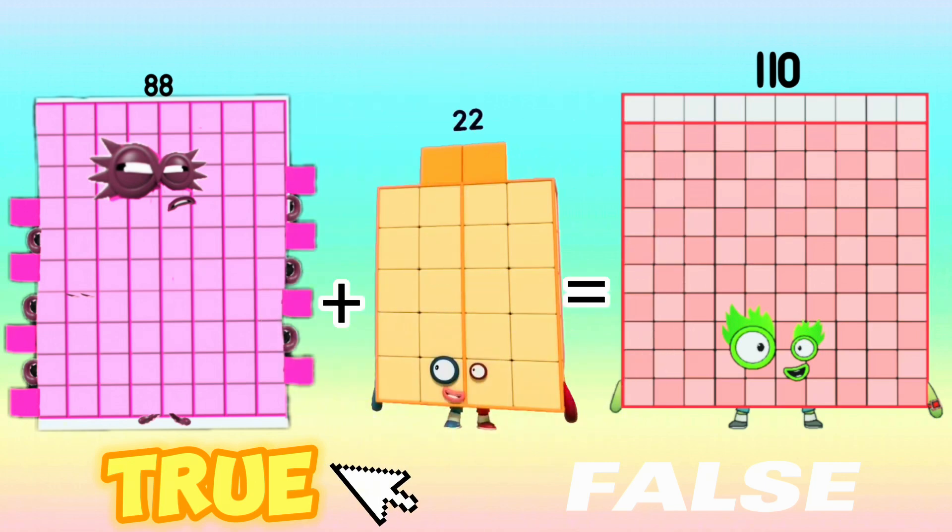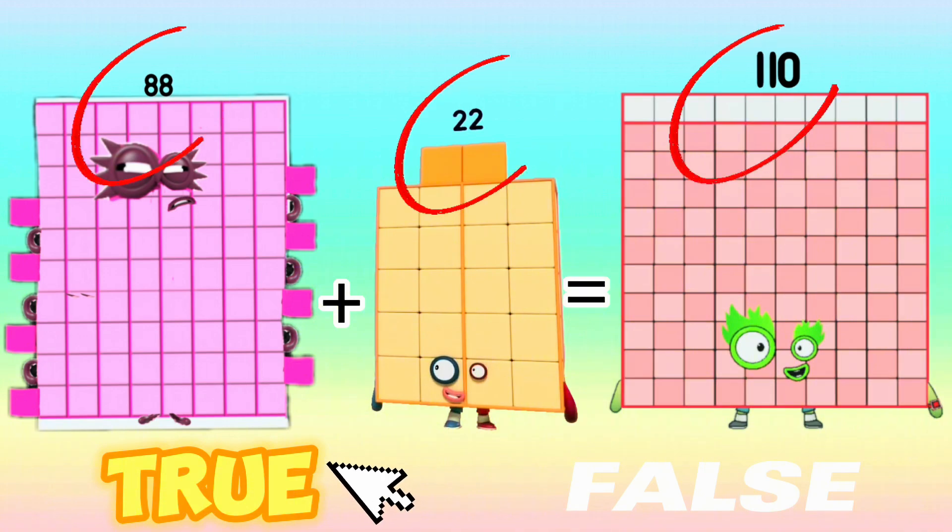If your answer is true, then you are right. 88 plus 22 is equals to 110.